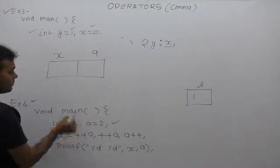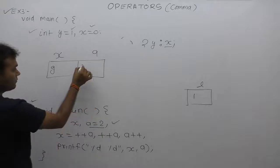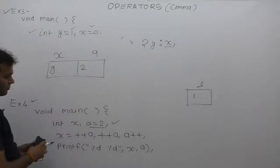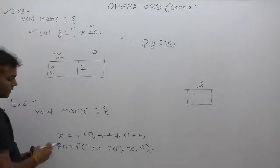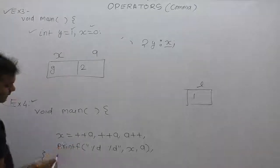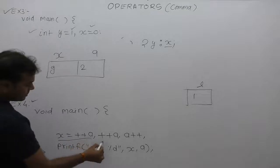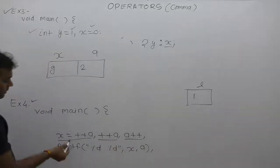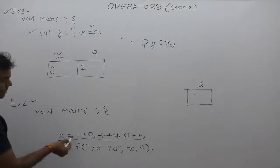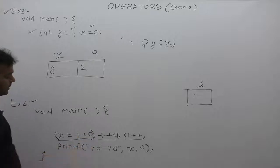The initial value of x is some value and the initial value of a is 2. We solve this expression — again we have comma-separated expressions. This is the first expression, this is the second, this is the third. The comma has the highest priority, so assignment is handled within each. The first operand of assignment is x and the second operand is ++a (pre-increment).